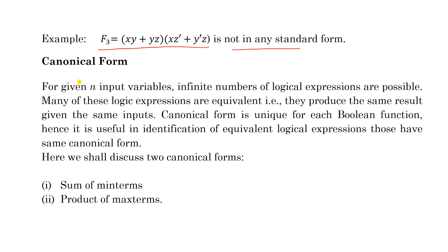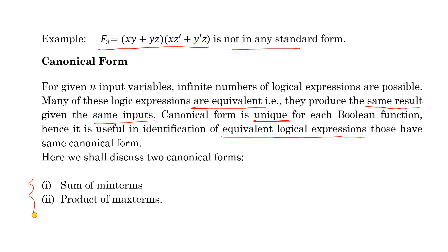Now, canonical form or normal form: for given input variables, you can write many logical expressions using complemented or ordinary forms, and many of these are equivalent — meaning they produce the same result for the same inputs. Canonical form is unique for each boolean function, making it useful for identifying equivalent logical expressions. There are two canonical forms: Sum of Min Terms and Product of Max Terms.